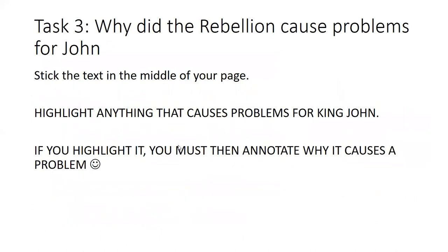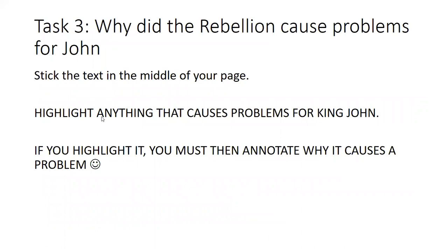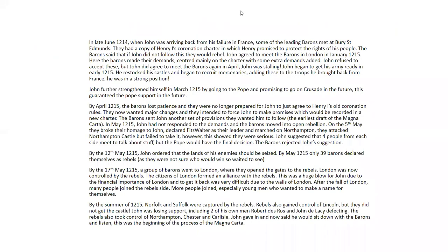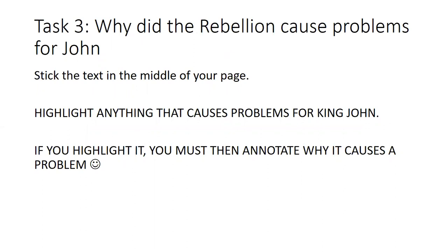Next, take the text, stick it in the middle of your page, and highlight anything that caused problems for King John. If you don't have the text, make bullet points on the problems John faced during the rebellion. For example, one of the biggest issues — absolutely damning for John — is when the rebel barons took London. The fact that rebels broke their homage showed John was losing control, and declaring Fitzwater as leader shows the barons had reached the end of their tether. Highlight and annotate why each thing causes a problem.